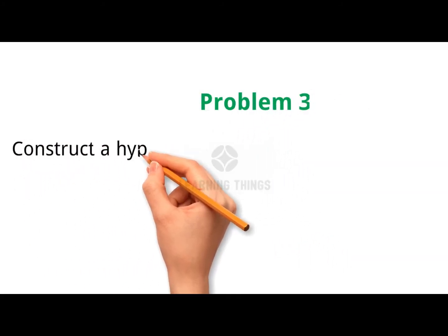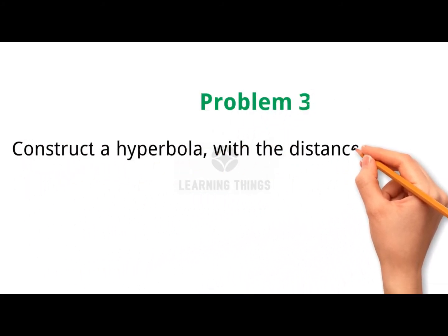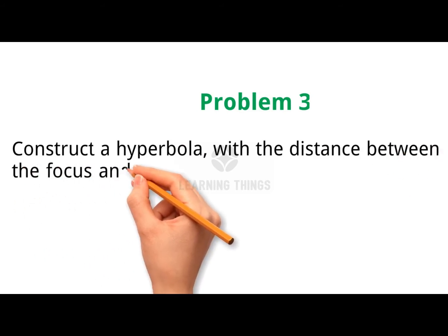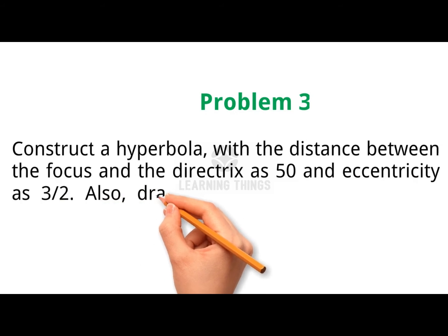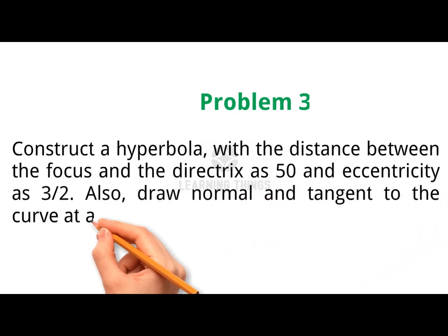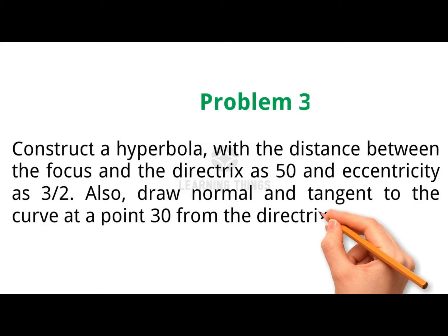Problem 3. Construct a hyperbola with the distance between the focus and the directrix as 50 and eccentricity as 3 by 2. Also, draw normal and tangent to the curve at a point 30 from the directrix.